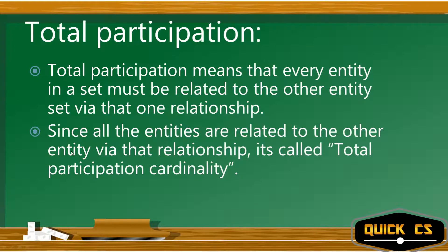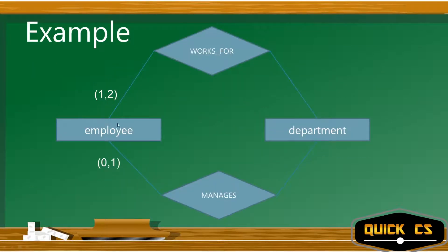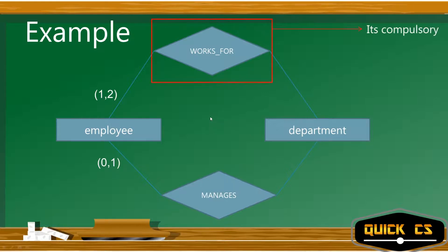Total participation cardinality is also known as existence dependence. For example, in 'employee works for department,' the employee must work for at least one department — the minimum cardinality is one. If an employee is not working for even one department, then that entity is not really an employee. So total participation means every employee must work for at least one department — the relationship is compulsory.